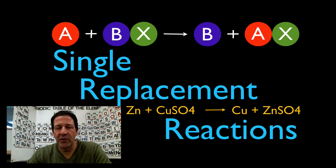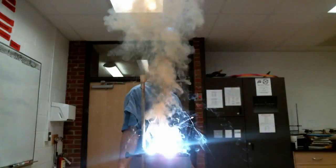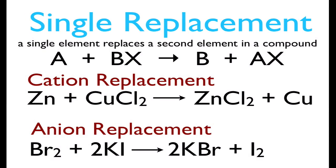In today's video we're going over single replacement reactions. A single replacement reaction is when a single element replaces a second element in a compound. Here's the general form: we have our lone element A, and that single element is going to replace element B, which is in the compound BX. Basically, A kicks B out.